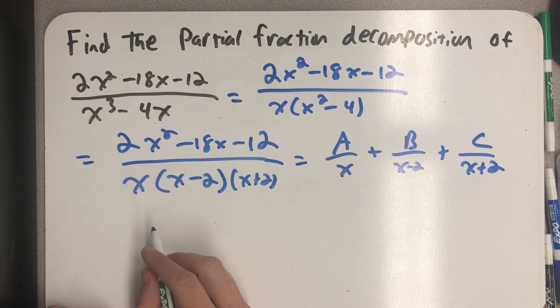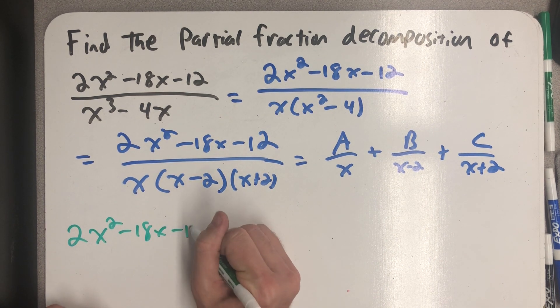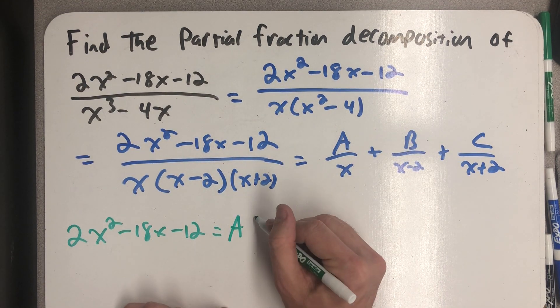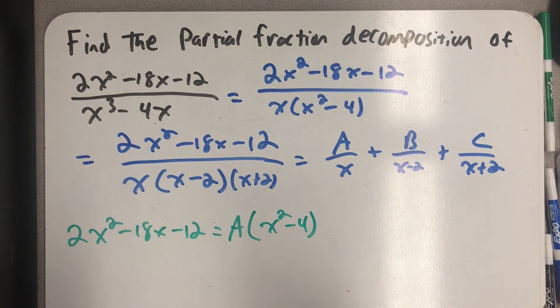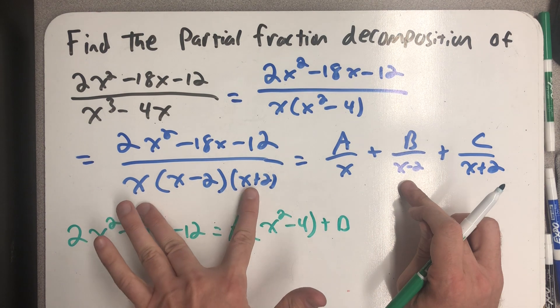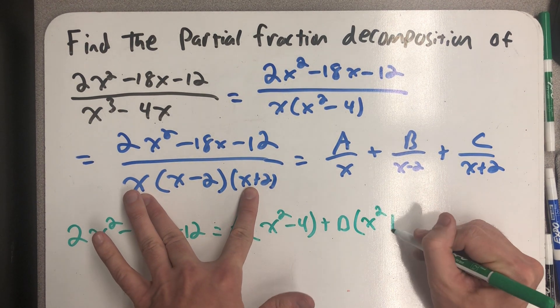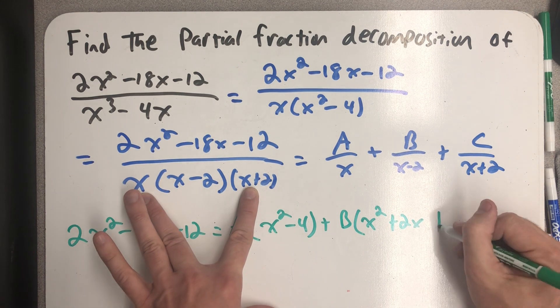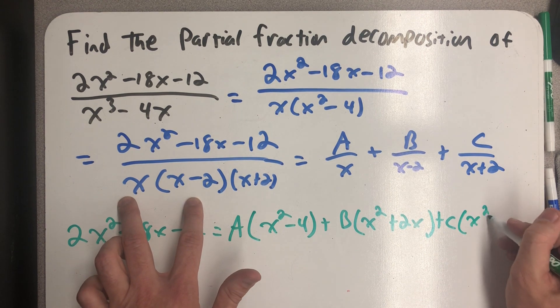So multiplying both sides of this last statement by the denominator would reveal that 2x squared minus 18x minus 12 is equal to, well when I multiply the bottom of this side the x's cancel here and leave me with A times x minus 2 times x plus 2 but I know that's x squared minus 4 so I'm just going to go on and write that down plus B times the x minus 2's cancel and I'd have x times x plus 2 so I'm going to go on and distribute that through. And you can do this in as many steps as you need to plus C and here the x plus 2's cancel and I'd be left with x squared minus 2x.